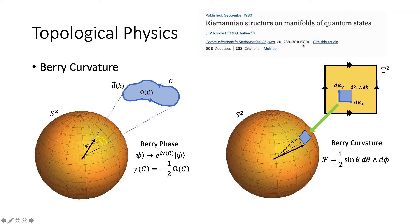Can quantum states have a form of curvature as well? Yes, they can. This is known as Berry curvature. Specifically, if we adiabatically transport a quantum state in a loop in parameter space, we acquire something known as the Berry phase. This is analogous to the rotation of the vector when we parallel transported it.